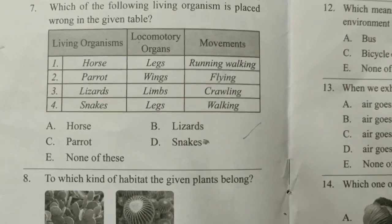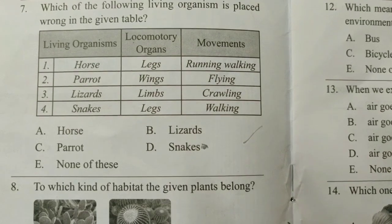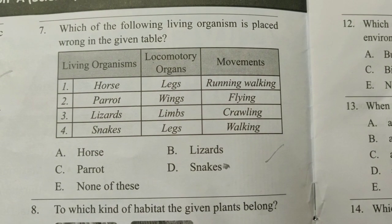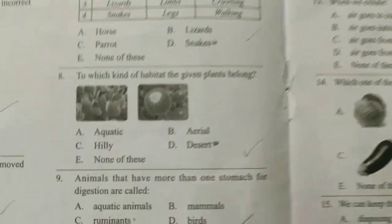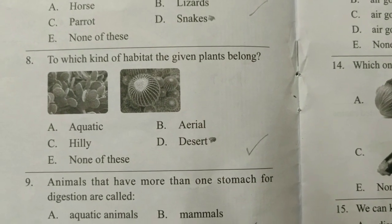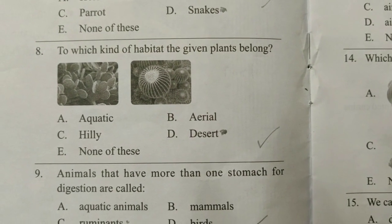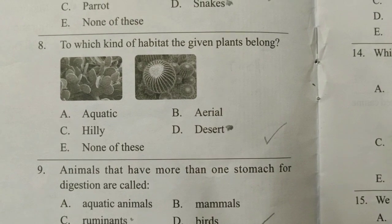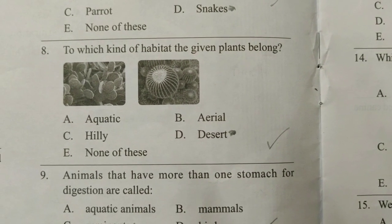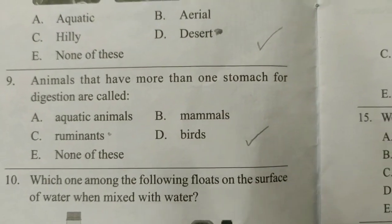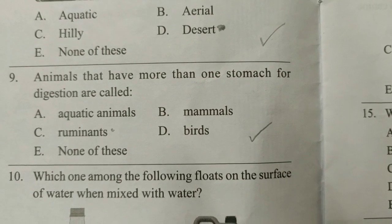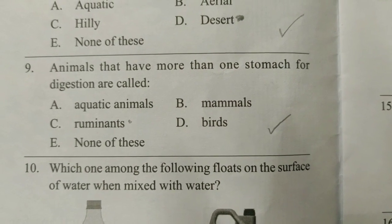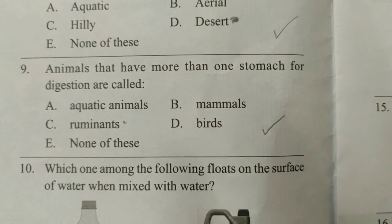Question 7: Which of the following organisms is placed wrong in the given table? The answer is D, and it is from Chapter 7. Question 8: To which kind of habitat do the given plants belong? The answer is D, but no information is provided regarding this in the study material given to students. Question 9: Animals that have more than one stomach for digestion are called ruminants. No information is given about this in the study material either.